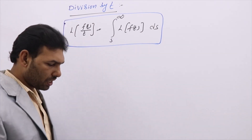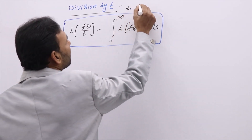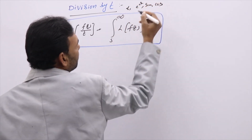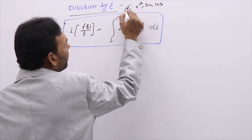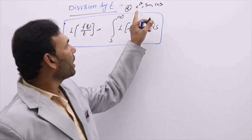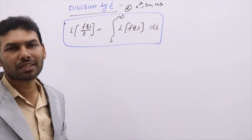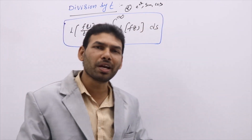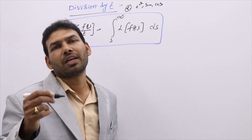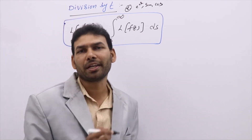In Laplace problems, you will find these functions only: t, e^(at), sine, and cosine. So t is fixed in the denominator. In the numerator, you may have e^(at), or sine, or cosine. That means problems may be like this: L{e^(at)/t}, L{sin(t)/t}, L{cos(t)/t}.